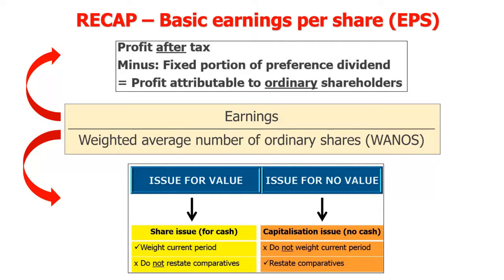We are then going to reduce our profit after tax by any preference dividends. Remember the rules with cumulative preference dividends: they are always taken into account, and regardless of whether there's an amount in arrears or not, we only take into account the current year. With non-cumulative preference dividends we must only take into account amounts that have been declared. Note they don't need to be paid already — they just need to be declared.